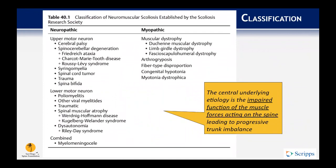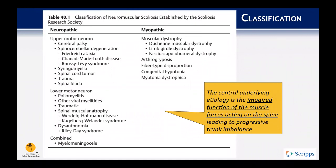The SRS has put together a classification system based on the underlying etiology of the neuromuscular disease process. It's really split up into neuropathic and myopathic. Neuropathic is further split into three different types: upper motor neuron-based pathology, lower motor neuron-based pathology, and a combined type.